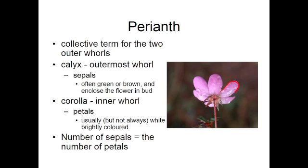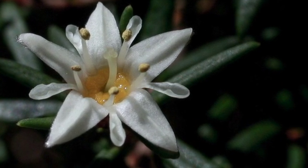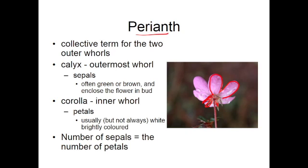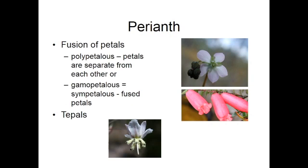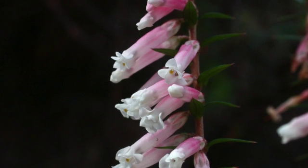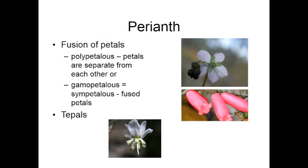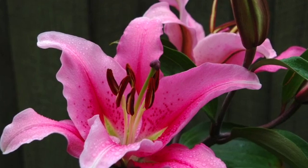In flowers, it's usually the corolla or the petals that are bright and colorful, but not always. Sometimes the showy role is taken by the normally green sepals. The collective term for the two outer whorls of the flower is the perianth. The calyx is the outermost whorl of sepals and the corolla is the next innermost whorl of petals. Usually the number of sepals is the same as the number of petals. The petals can vary enormously in shape as well as color and can sometimes fuse to form corolla tubes. Sometimes the sepals and the petals are difficult to distinguish, as in lilies, and these are called tepals.